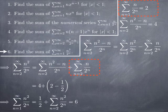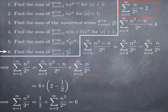The series from 1 to infinity of n² over 2^n equals the first term when n = 1, which is 1/2, plus the series starting at 2 of n² over 2^n, which we found to be 4 minus (2 minus 1/2) = 6 minus 1/2. Wait — so that gives (1/2) + (6 − 1/2) = 6. We have found the exact sum of our numerical series: 6.